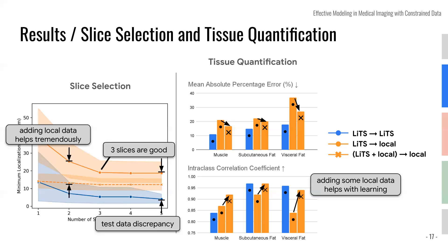Now we have these numbers, we can use the quantification of tissue in a survival analysis. The input is the whole volume from which we extract a slice — a tensor that becomes a slice. At the output, you will have the area for the different tissues. So you do segmentation and count the pixels.